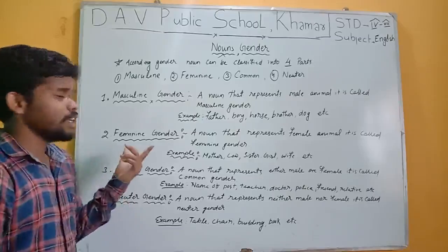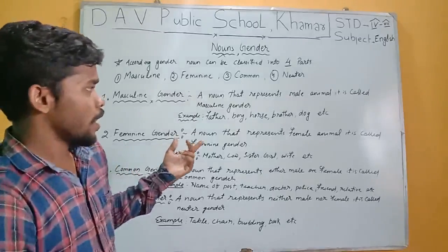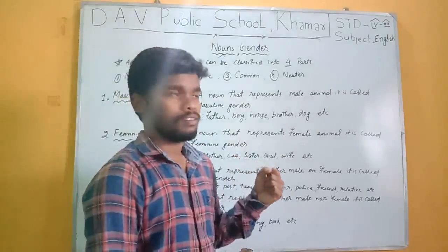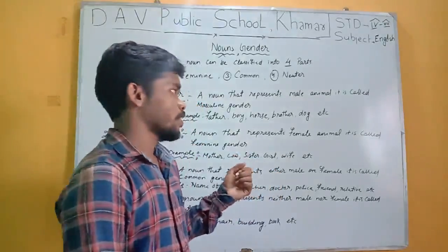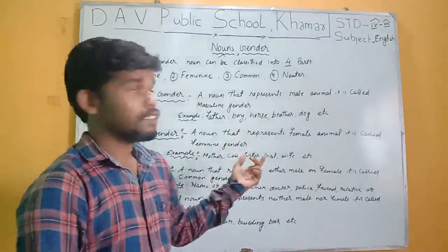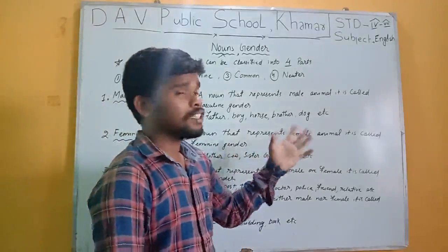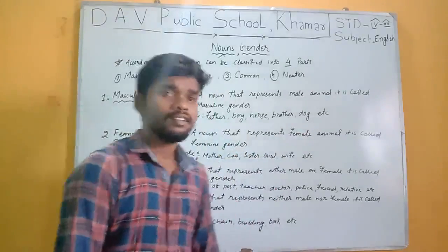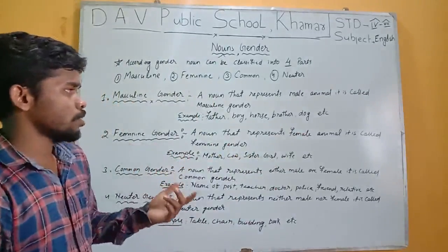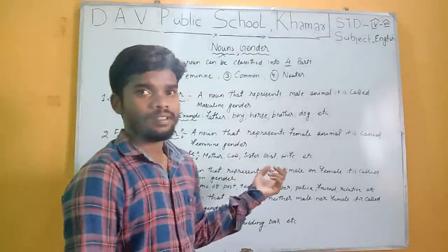The second one is feminine gender. A noun that represents a female animal is called feminine gender. For example: mother, cow, sister, girl, wife.